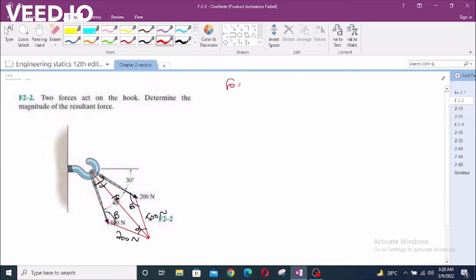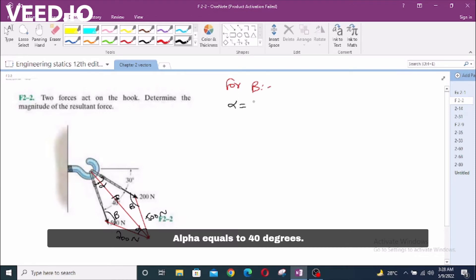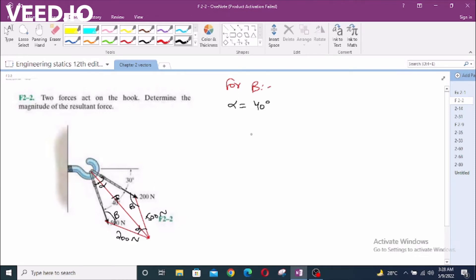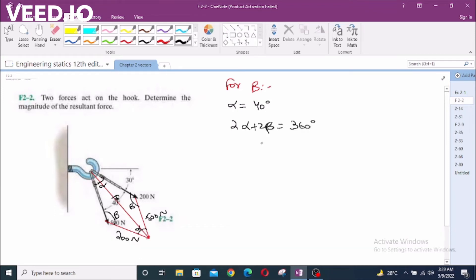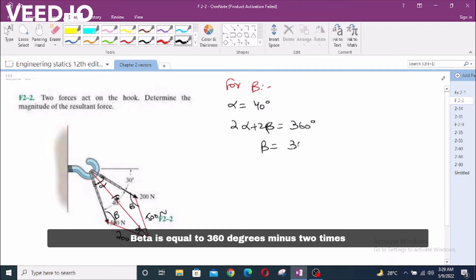For Beta, Alpha is equals to 40 degrees. 2 Alpha plus 2 Beta equals 360 degrees. Beta is equals to 140 degrees minus 2 times 40 over 2. Beta is equals to 140 degrees.